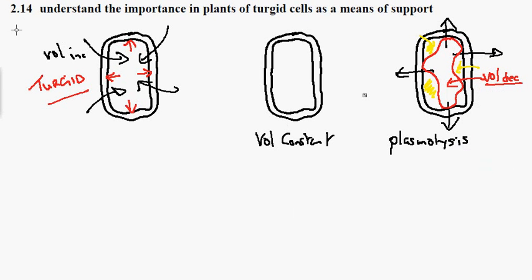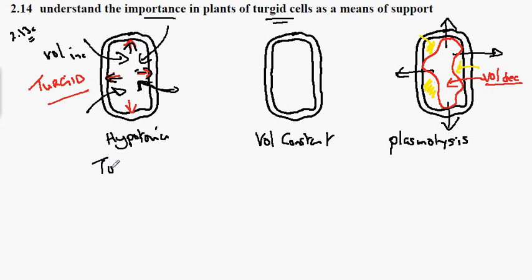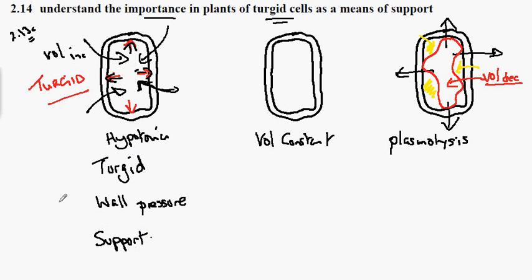GCSE Biology Syllabus Statement 214. Here we're looking at the importance in plant cells of turgid cells. You'll recall from 213C that when a cell is in a hypotonic solution, the net effect is for water to move into the cells, the volume of the cytoplasm increases, and this exerts a pressure outward on the cell wall — we describe this as being turgid. This wall pressure provides the plant with support, so that the plant seedling is growing upright like this.